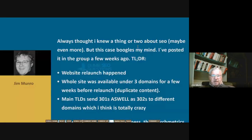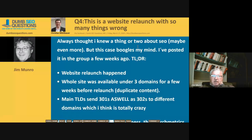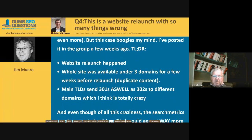Next up is Christian Mulbo. He said: 'This is a website relaunch with so many things wrong. I always thought I knew a thing about SEO, but this case boggles my mind. The too-long-didn't-read version: a website relaunch happened and the whole site was available under three domains for a few weeks before the relaunch — causing duplicate content. The main TLDs sent both 301s and 302s to different domains, which I think is totally crazy.'